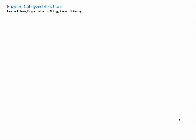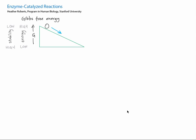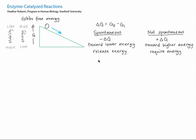In the Intro to Thermodynamics tutorial, we saw that Gibbs free energy is a way to quantify the spontaneity or favorability of a process. Just like rocks naturally roll downhill, all processes naturally tend to go toward lower energy, which is higher stability. So spontaneous processes start at higher energy and go toward lower energy, resulting in a negative delta G, which is defined as G final minus G initial. These spontaneous processes release energy, which can dissipate into the surroundings as heat or be harnessed to do work.